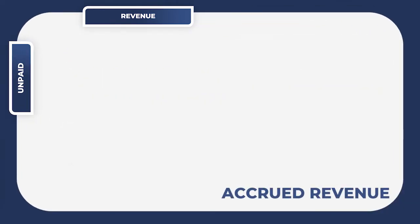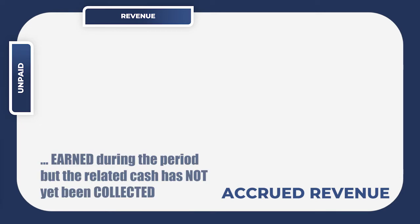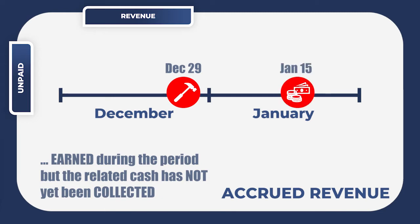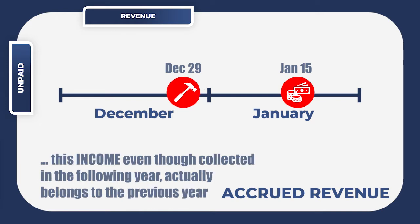Accrued revenue adjustments happen when revenue or income is earned during the period but the related cash has not yet been collected or the customer has not yet been formally billed. A perfect example is when the company rendered services towards the end of the year and the related invoice has not yet been issued or the amount has not yet been paid. As a result, the customer received the bill the following year and then it was eventually paid. It is an adjusting entry because based on the accrual basis, this income — even though billed and collected in the following year — actually belongs to the previous year.